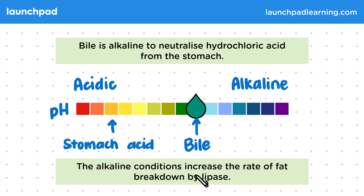By mixing together, the bile actually neutralizes the stomach acid, moving it a little bit further up the pH scale. The alkaline conditions increase the rate of fat breakdown by lipase — the optimum pH for lipase is alkaline, so it works faster at this higher pH.